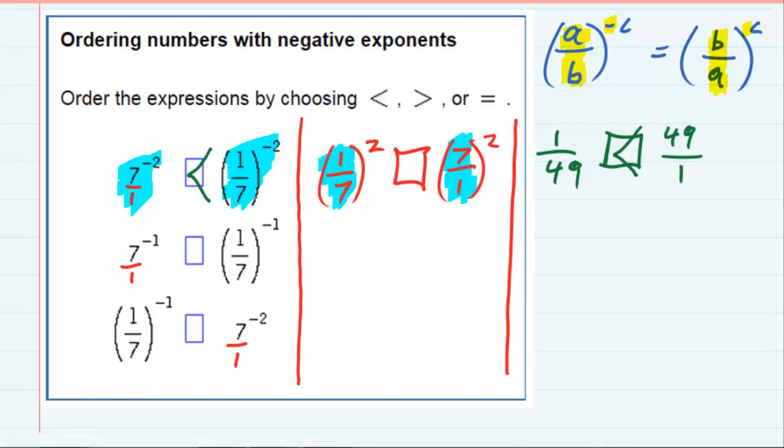And then we'll just do the same for the other expressions. The next one down is 7 over 1 to the negative 1, which will be 1 over 7 raised to the positive 1.